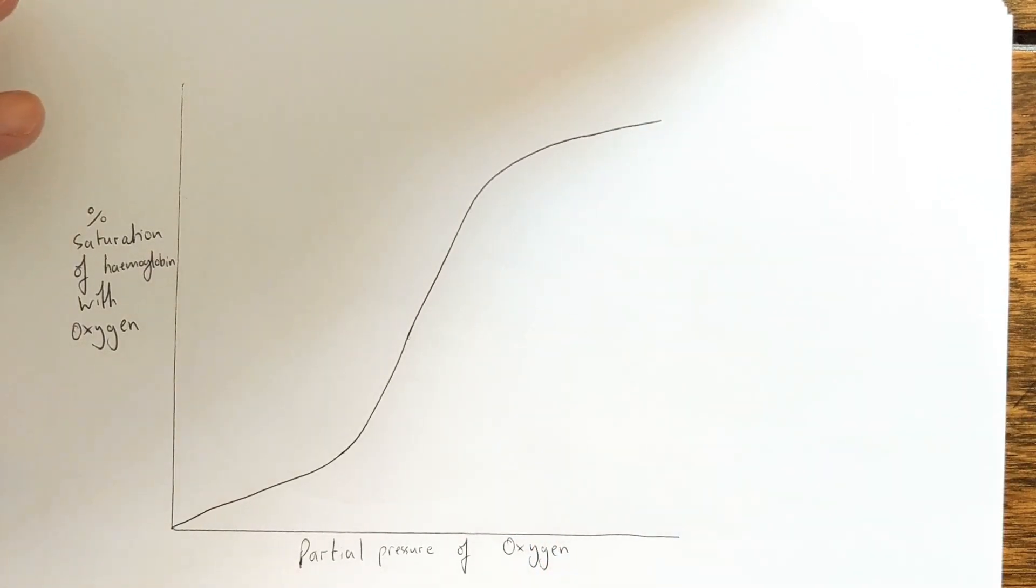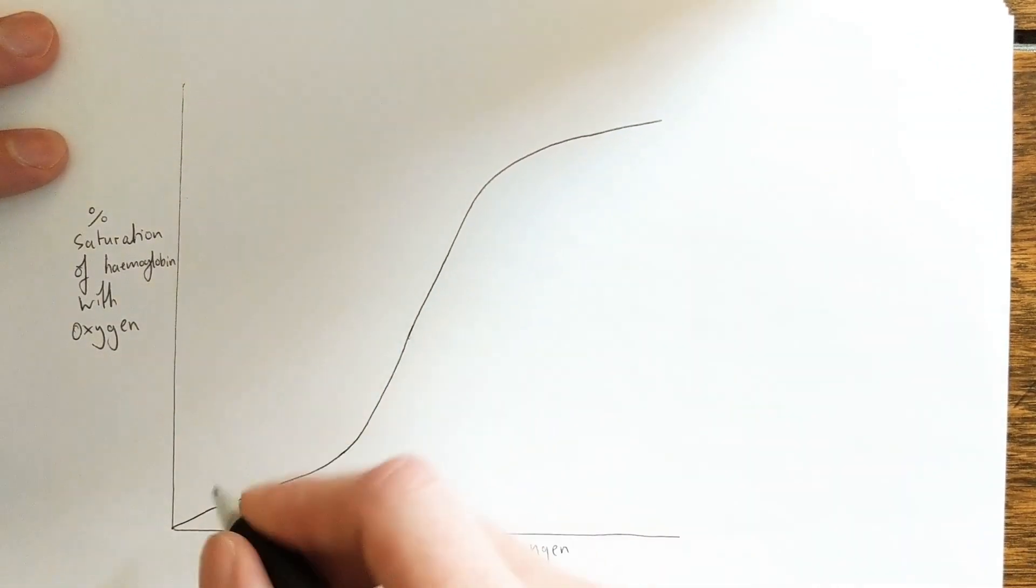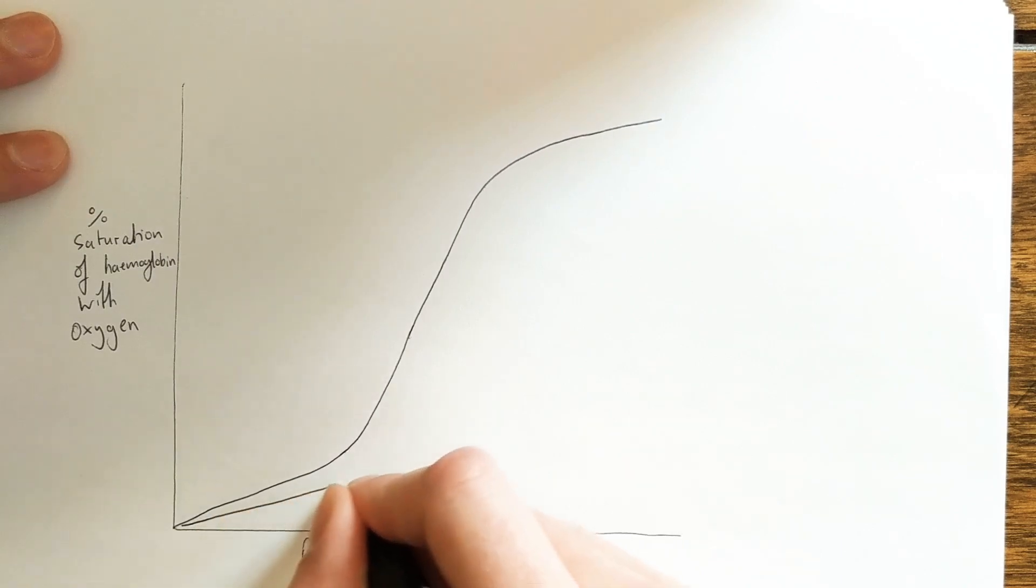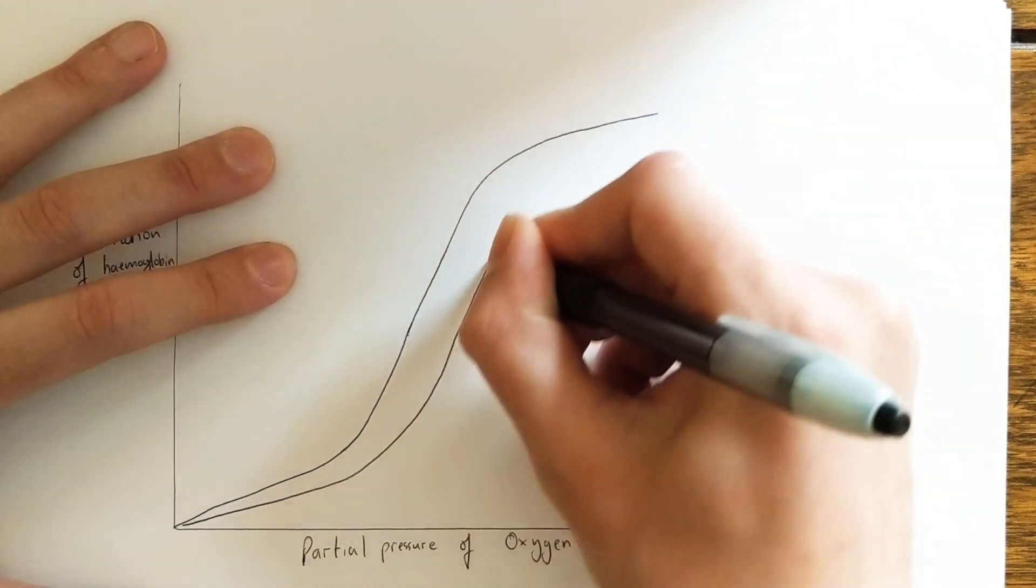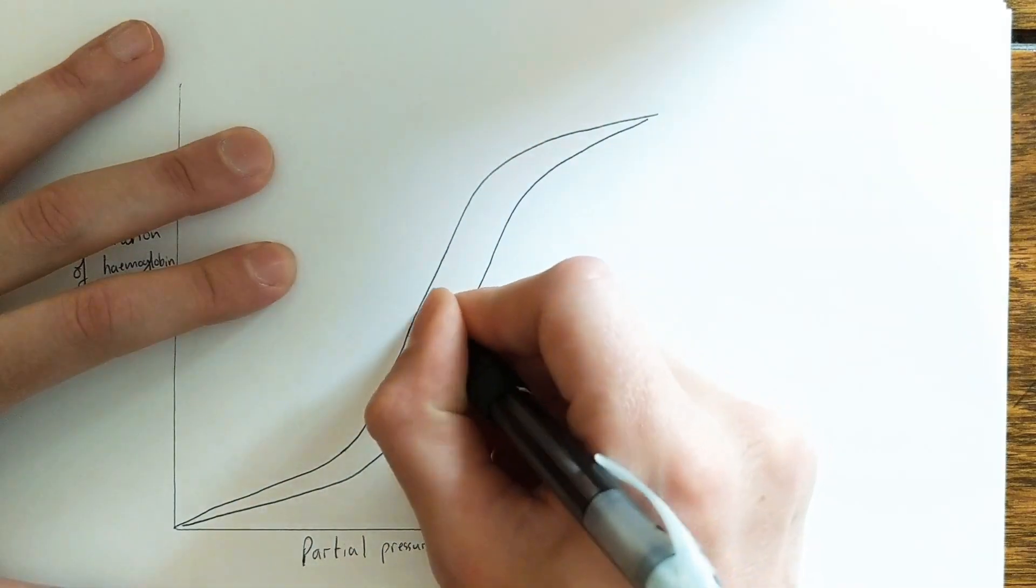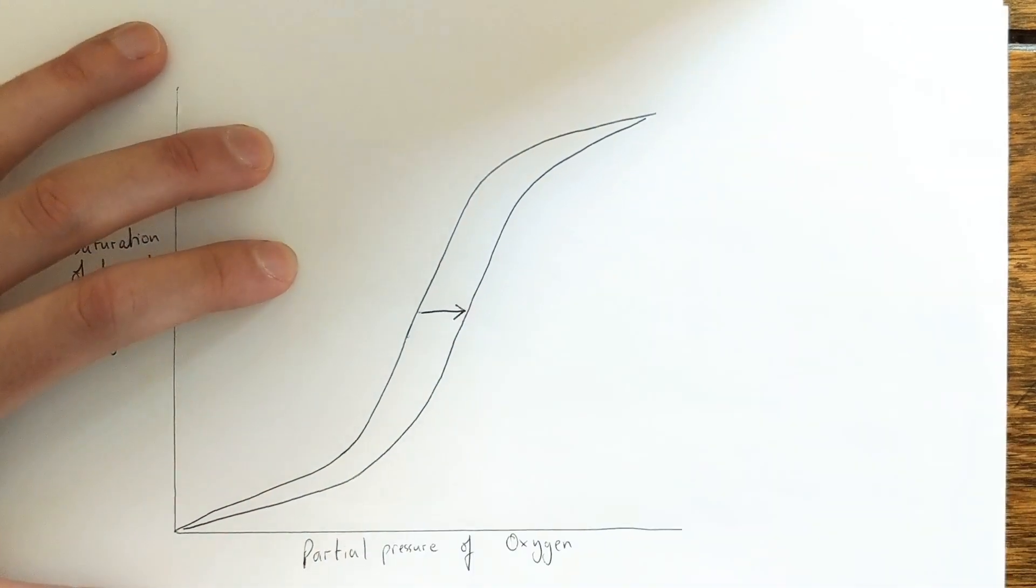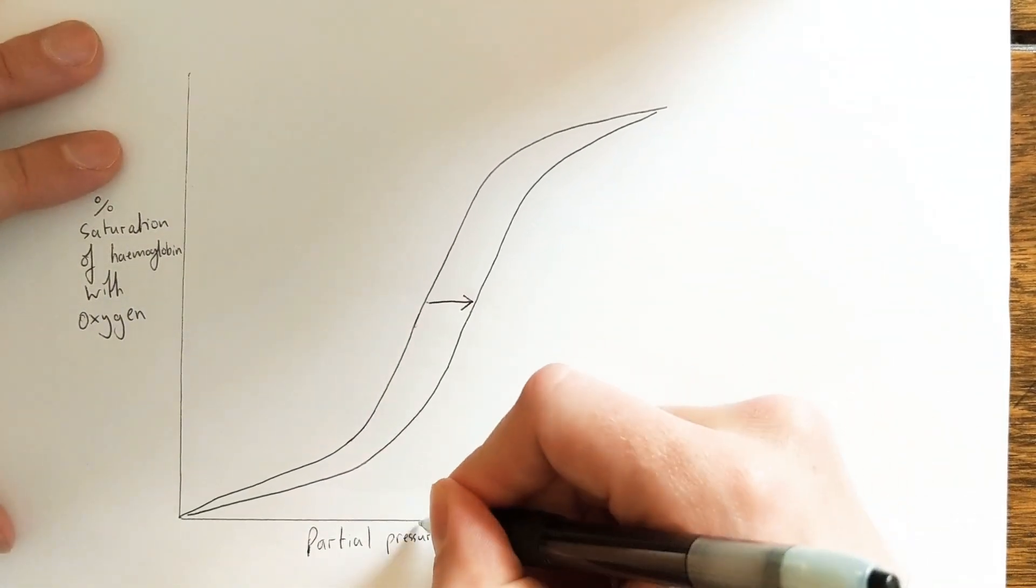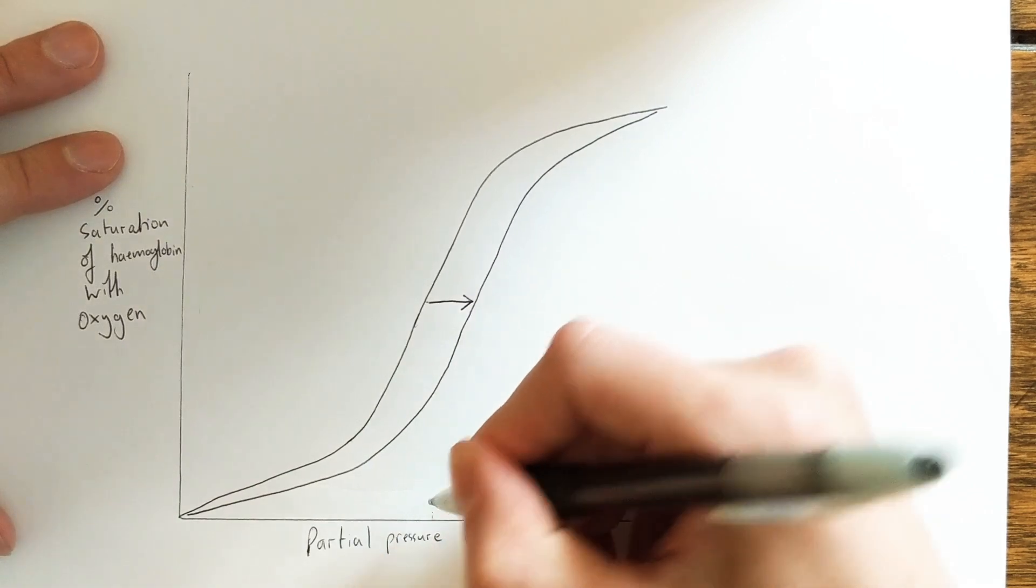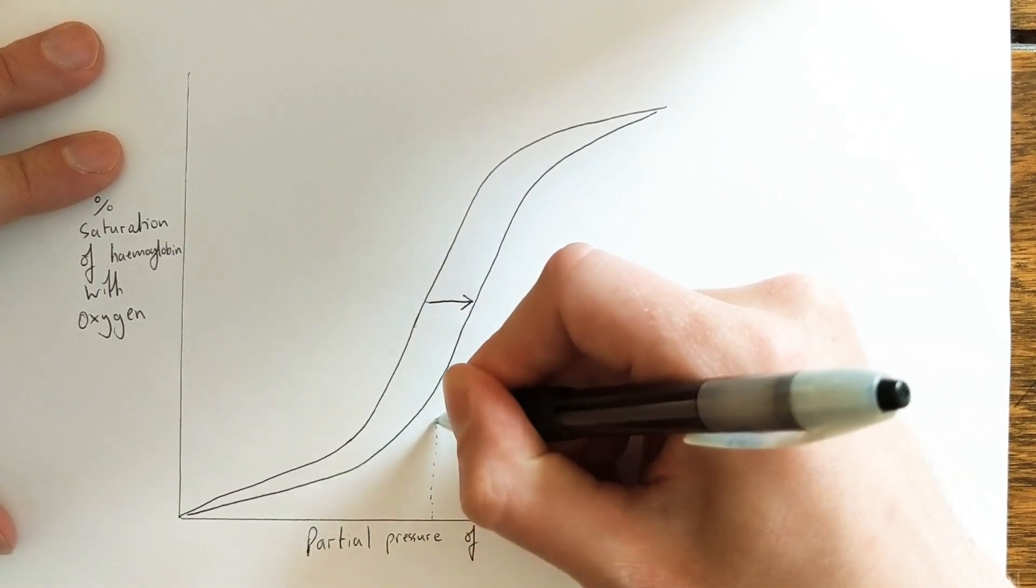Now the presence of increased carbon dioxide levels shifts this line slightly to the right. And that means that at the same partial pressure of oxygen, as in the same concentration of oxygen in the surroundings,